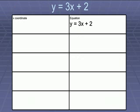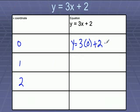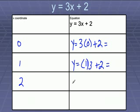Okay, let's try another one. This equation is y equals 3x plus 2. So we're just going to pick some points for our coordinates. I'm just going to put 0, 1, and 2. We're going to go ahead and substitute our x coordinate into our equation. So y equals 3 times 0 plus 2. y equals 3 times 1 plus 2. And y equals 3 times 2 plus 2.